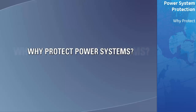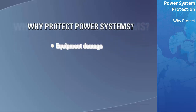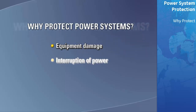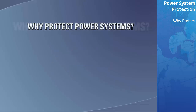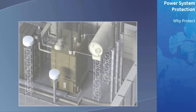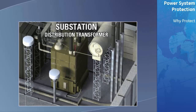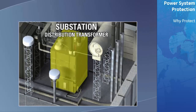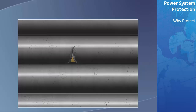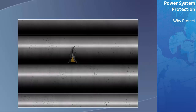The potential costs due to equipment damage, interruption of power, and associated safety issues give a high priority to protection. For example, if a small section of aging insulation in a large distribution transformer fails, high levels of fault current will flow.